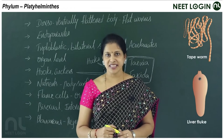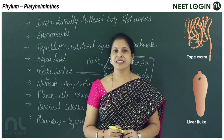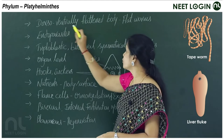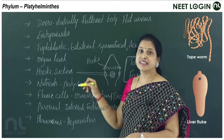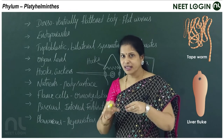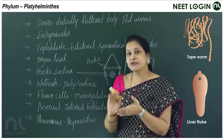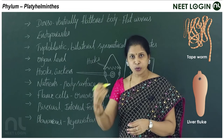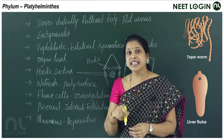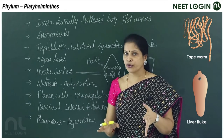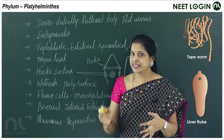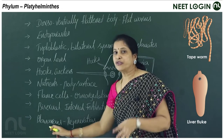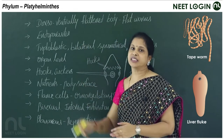The next phylum is Platyhelminthes. 'Platy' means flat, 'helminthes' means worms — these are flatworms. Their body is dorso-ventrally flattened, looking like a ribbon or leaf. Most platyhelminthes members are endoparasites living inside the body of hosts — mostly parasites on human beings. Fewer free-living forms like planarians also exist.